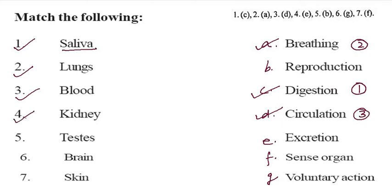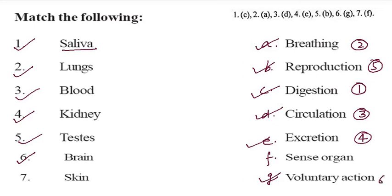Now kidney — where does it work? Kidney is for excretion, you can write here 4. Now testis — where does it work? Testis is for reproduction, so you can write here 5. Now brain — where does it work? Brain is for voluntary action, write here 6. And the second part is skin — the skin is a sense organ, you can write here 7.